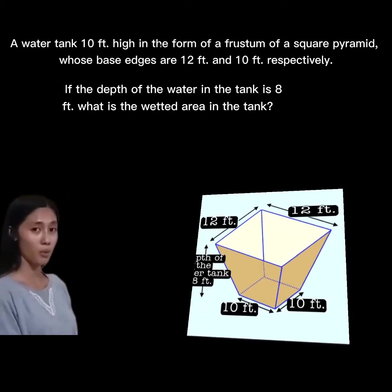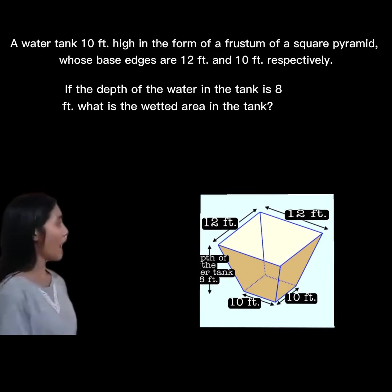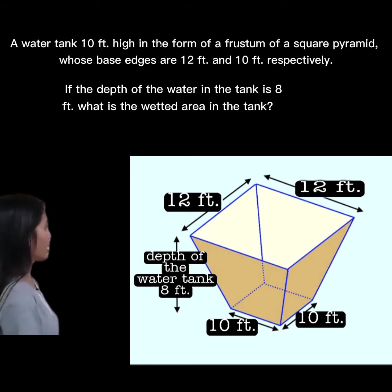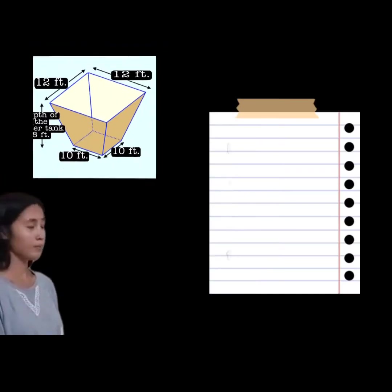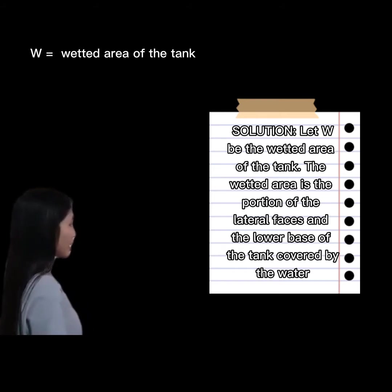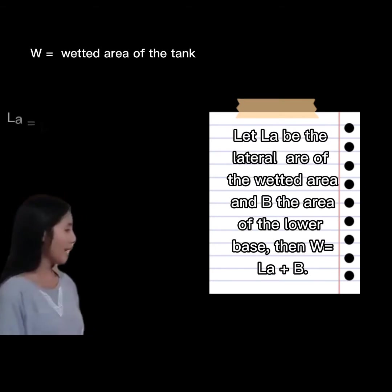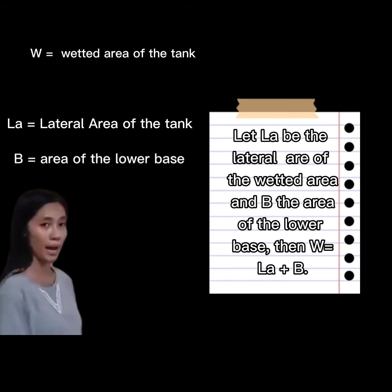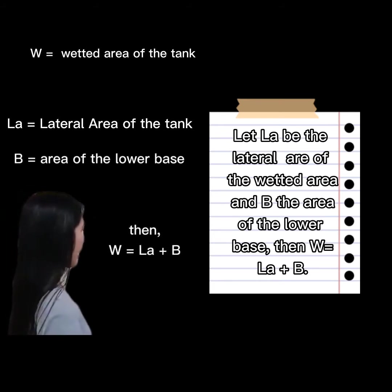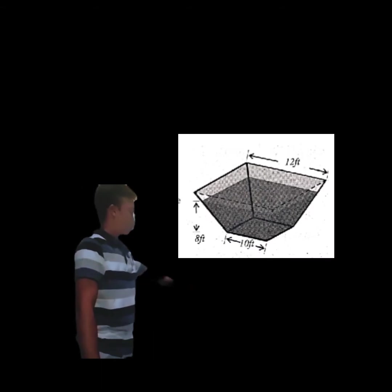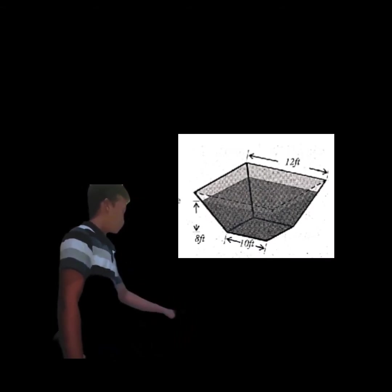Example 2 — Water Tank: A water tank 10 feet high is in the form of a frustum of a square pyramid whose base edges are 12 feet and 10 feet respectively, and the depth of the water in the tank is 8 feet. Find the wetted area. Let w be the wetted area of the tank — the portion of the lateral faces and the lower base covered by the water.